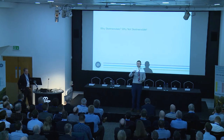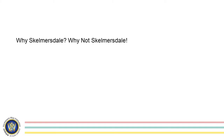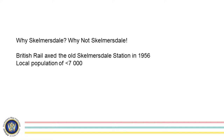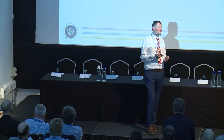Skemmersdale — why Skemmersdale? Why not? In 1956 British Rail axed the existing rail connection to Skemmersdale, which as we now all know is a small town in the northwest of England. It's not too far from here but it doesn't have a direct rail connection. It's actually the largest town in England — and arguably the UK — that doesn't have a direct rail connection.